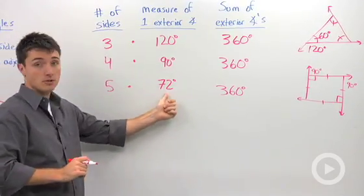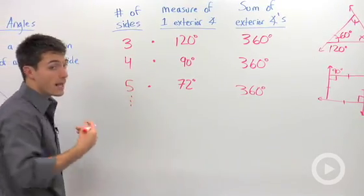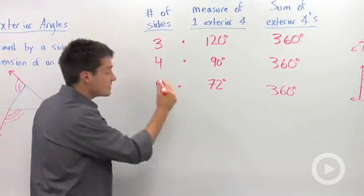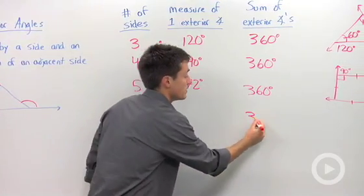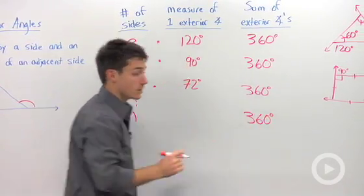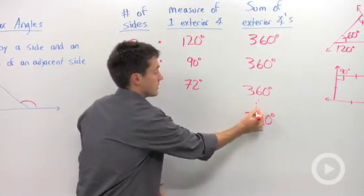Sure enough, five times 72 is 360 degrees. If we're going to generalize this for any polygon with n sides, the sum of the exterior angles will always be 360 degrees. Always. And I should include the dot dot dot here.